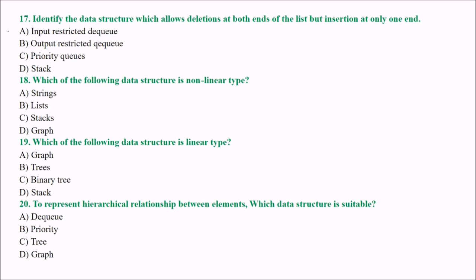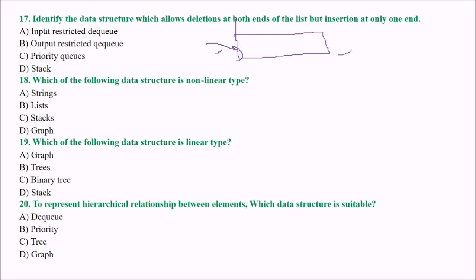Next: identify the data structure which allows deletion at both ends of the list but insertion at only one end. The answer is input restricted deque — it allows deletion from both ends but insertion only at one end.